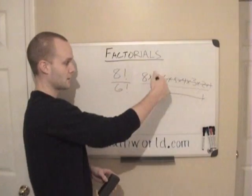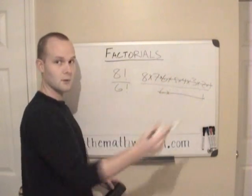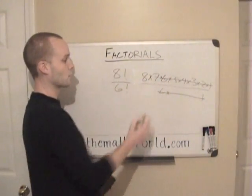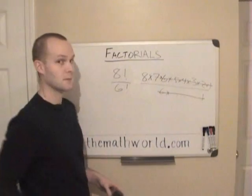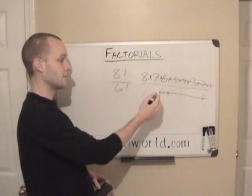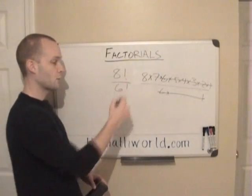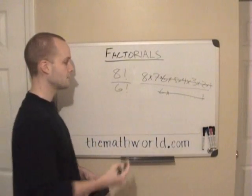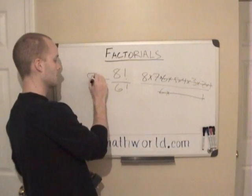Since they're being multiplied, we can just cancel out the 6s, the 5s, all the way down to 1. And what we're left with is 8 times 7. So 8 times 7 is 56. So 8 factorial divided by 6 factorial is 56.